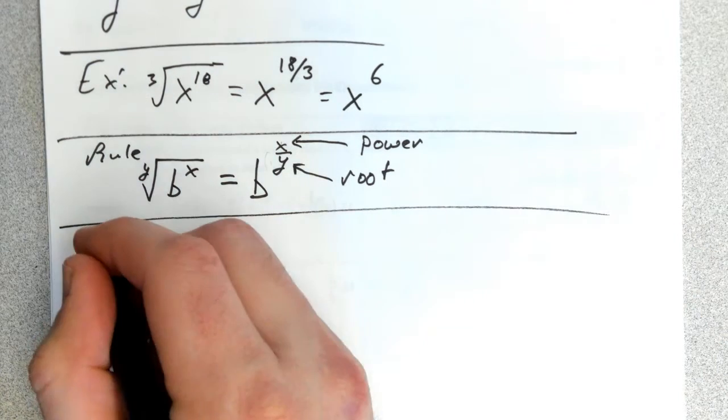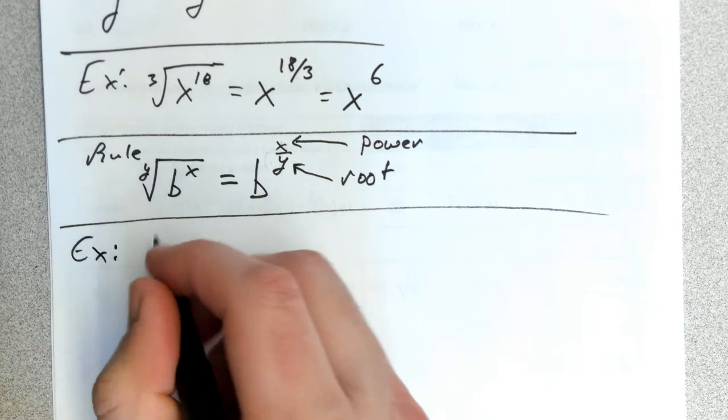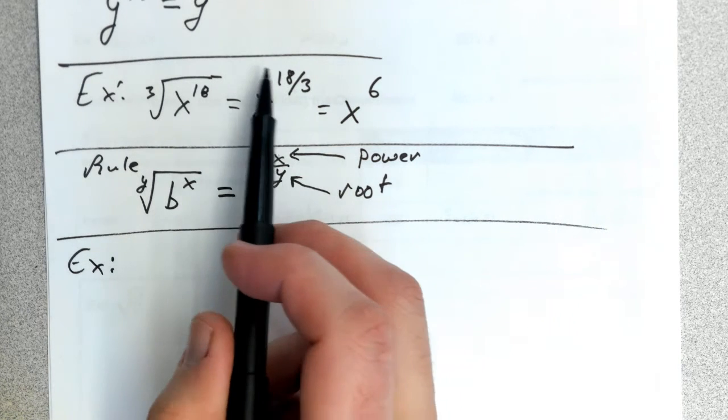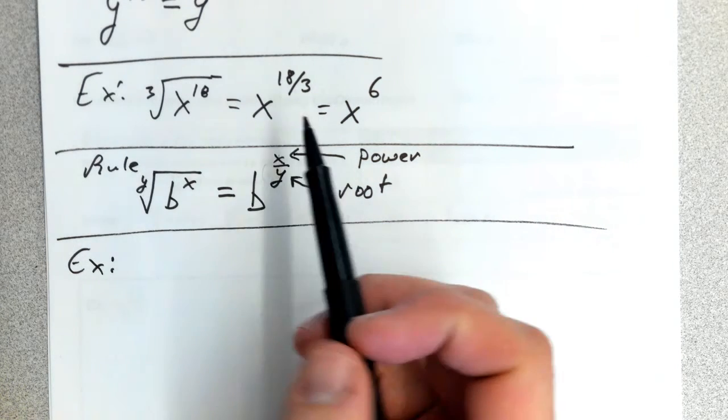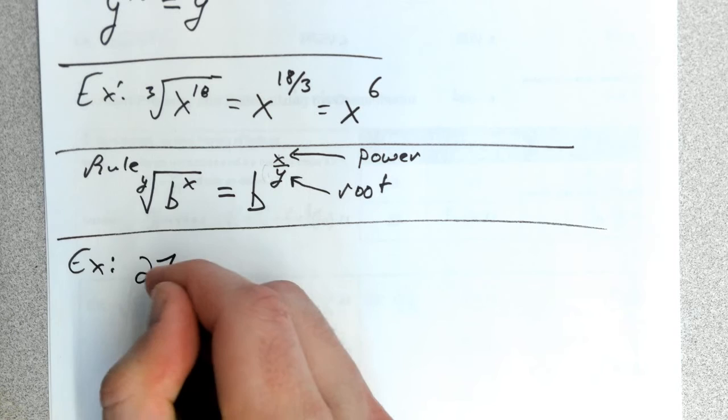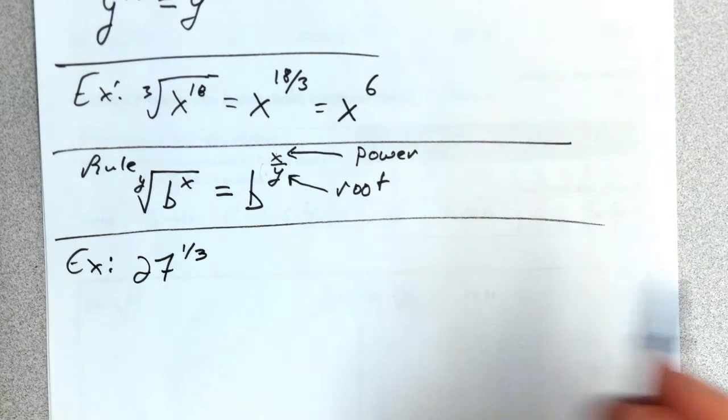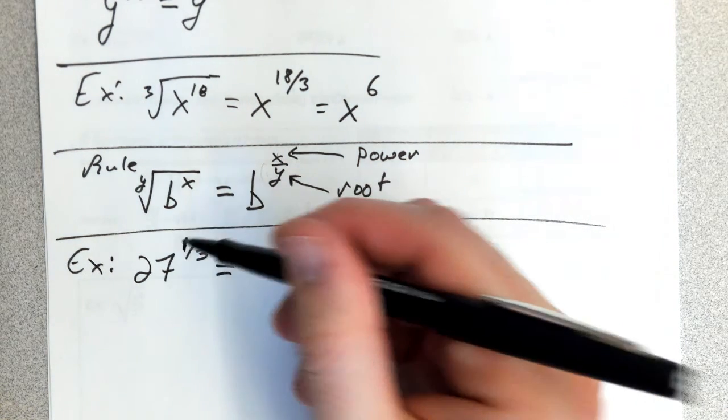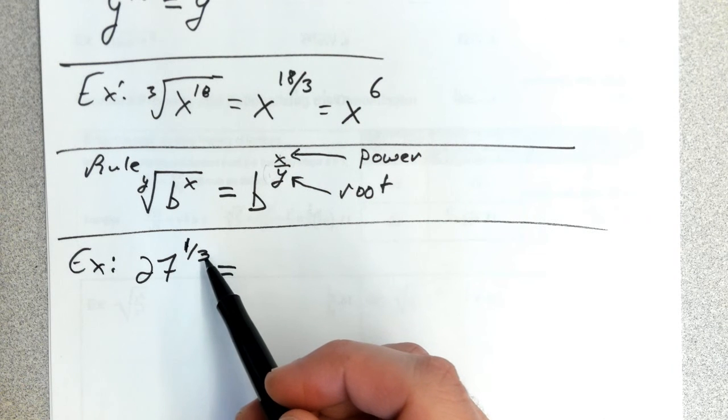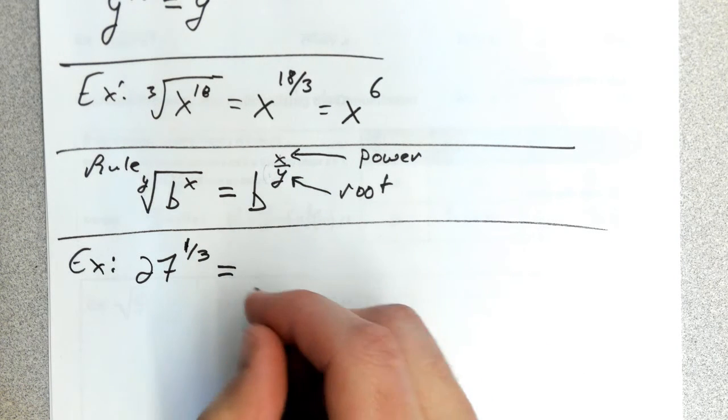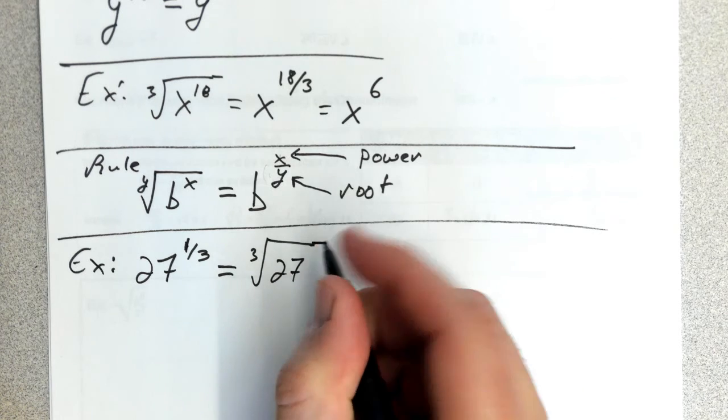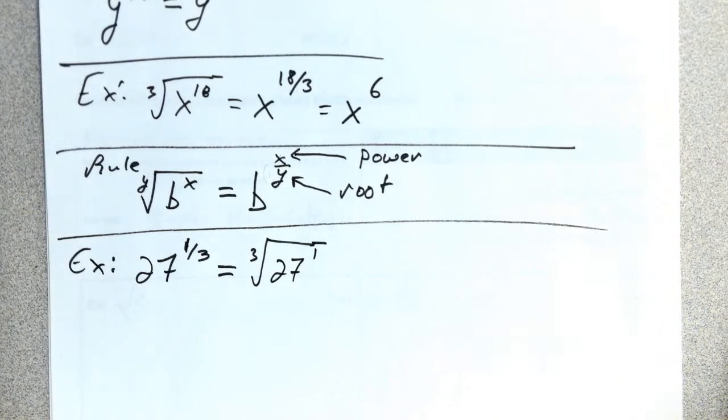By the way, this works both ways. You can take the cubed root of x^18 and write it as x^(18/3), or go the other way. For example, 27^(1/3)—your power is 1 and your root is 3—can be written as the cubed root of 27.